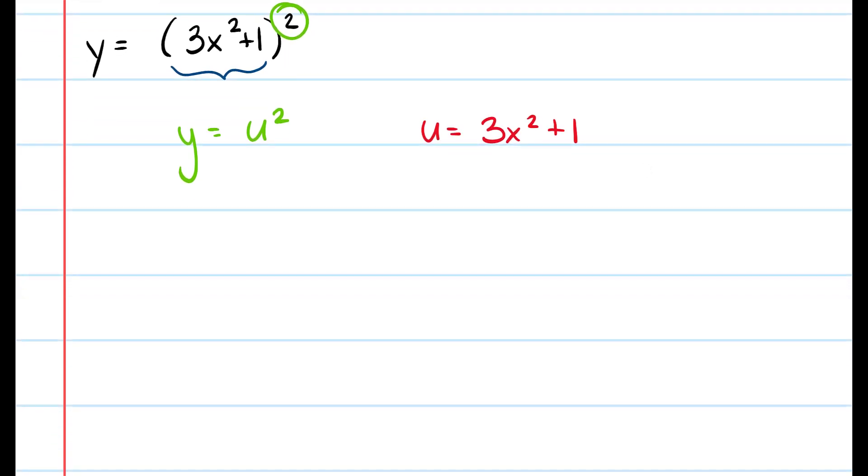And so notice if I were to take this 3x squared plus 1 and put it in here for the u I would get my original function back. So what I'm doing is I'm breaking down this composite function into its two pieces.